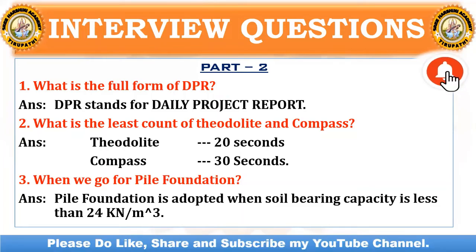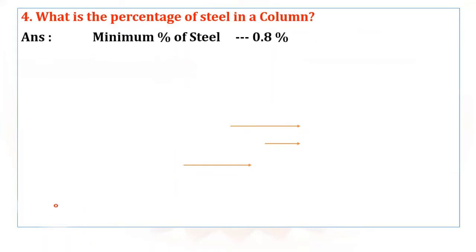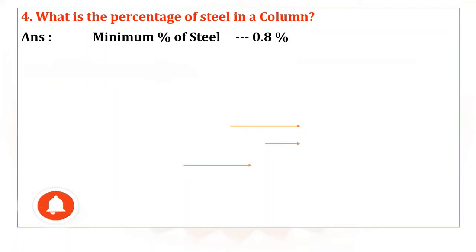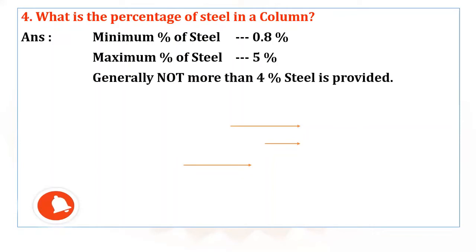Coming to the fourth question: What is the percentage of steel in a column? The minimum percentage of steel in a column is 0.8%. The maximum percentage of steel is 5%. Generally, not more than 4% steel is provided.